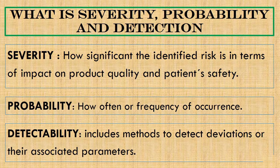To be clear on the risk prioritization concept, we need to revisit the concept of severity, probability, and detection. Severity is how significant the identified risk is in terms of impact on product quality and patient safety. If the identified risk has more impact on product quality and patient safety, it will be categorized as severe.